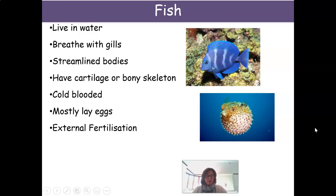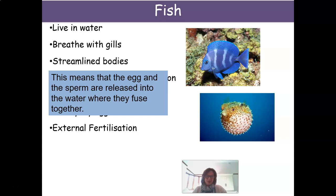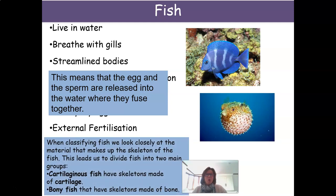Our second group of vertebrates are fish. They live in water, breathe with gills, have streamlined bodies, and have cartilage or bony skeletons. They are cold-blooded, mostly lay eggs, and have external fertilization — meaning the egg and sperm are released into the water where they fuse together. When we classify fish, we look at the material making up the skeleton, dividing them into cartilaginous fish, which have skeletons made of cartilage, and bony fish, which have skeletons made of bone.